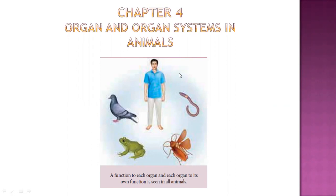In the previous chapter we discussed some case studies. We looked at invertebrates — examples like earthworm and cockroach — and for arthropods, cockroach was given. For vertebrates, the example given was a frog, which is an amphibian.